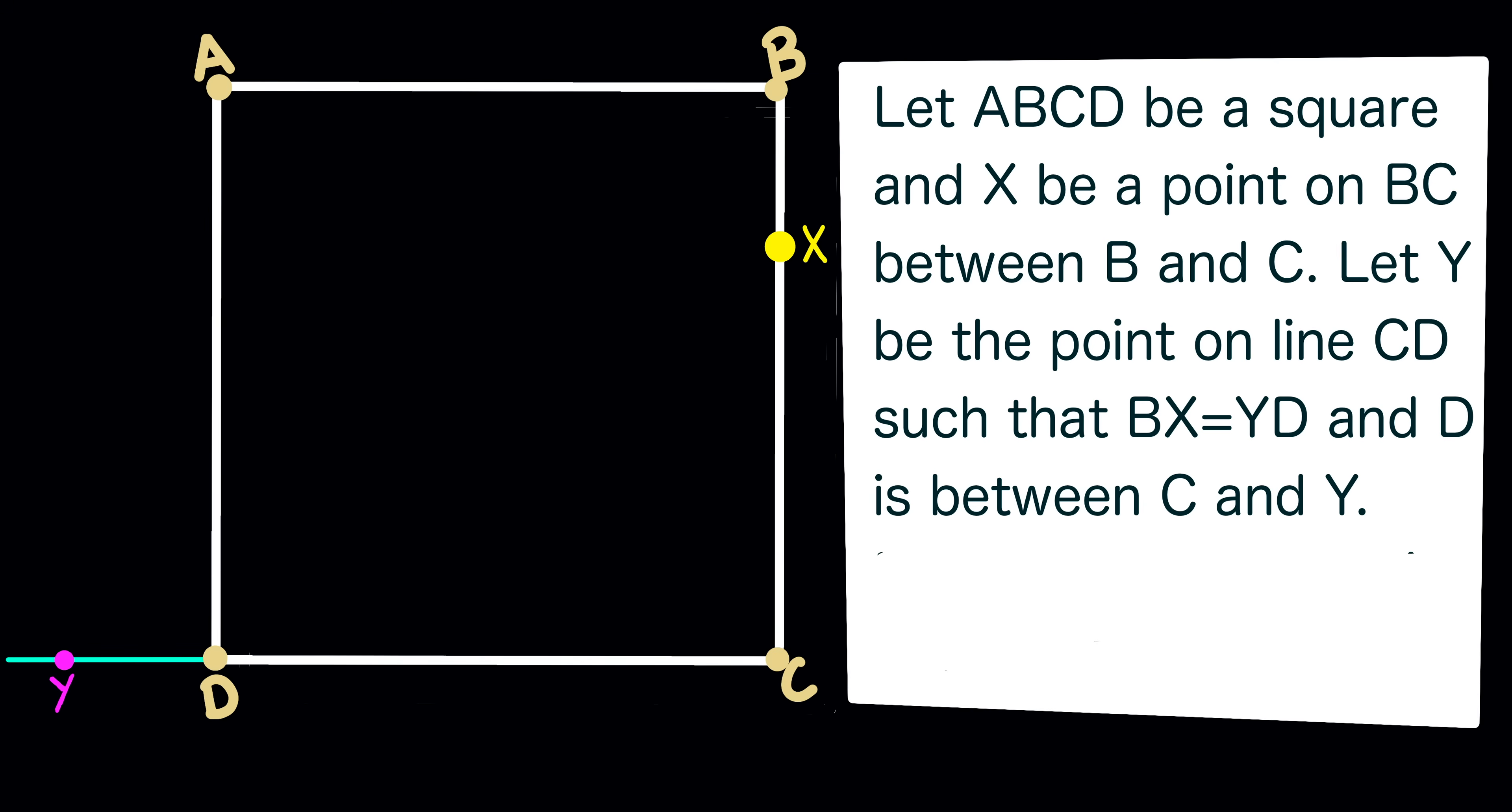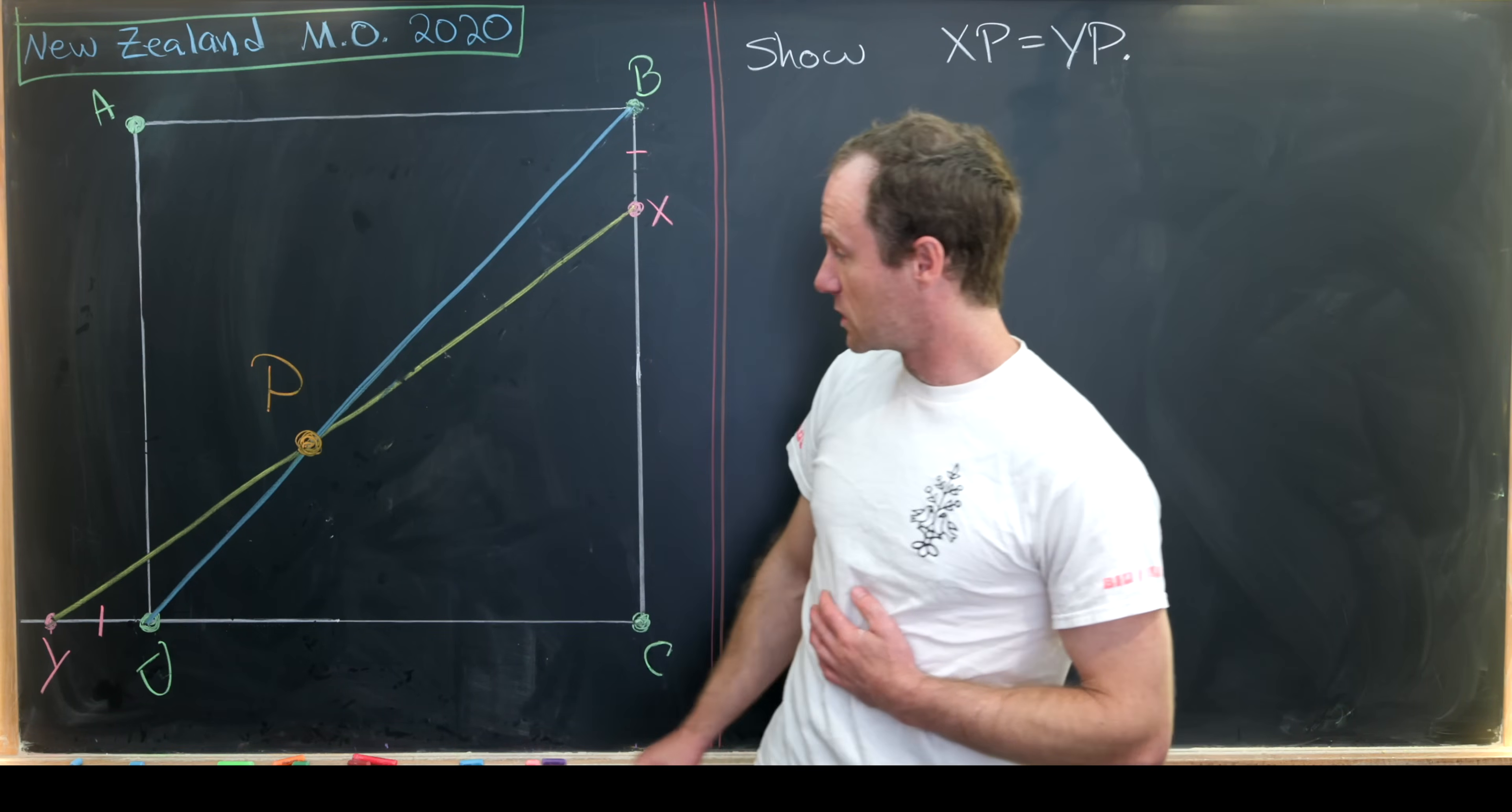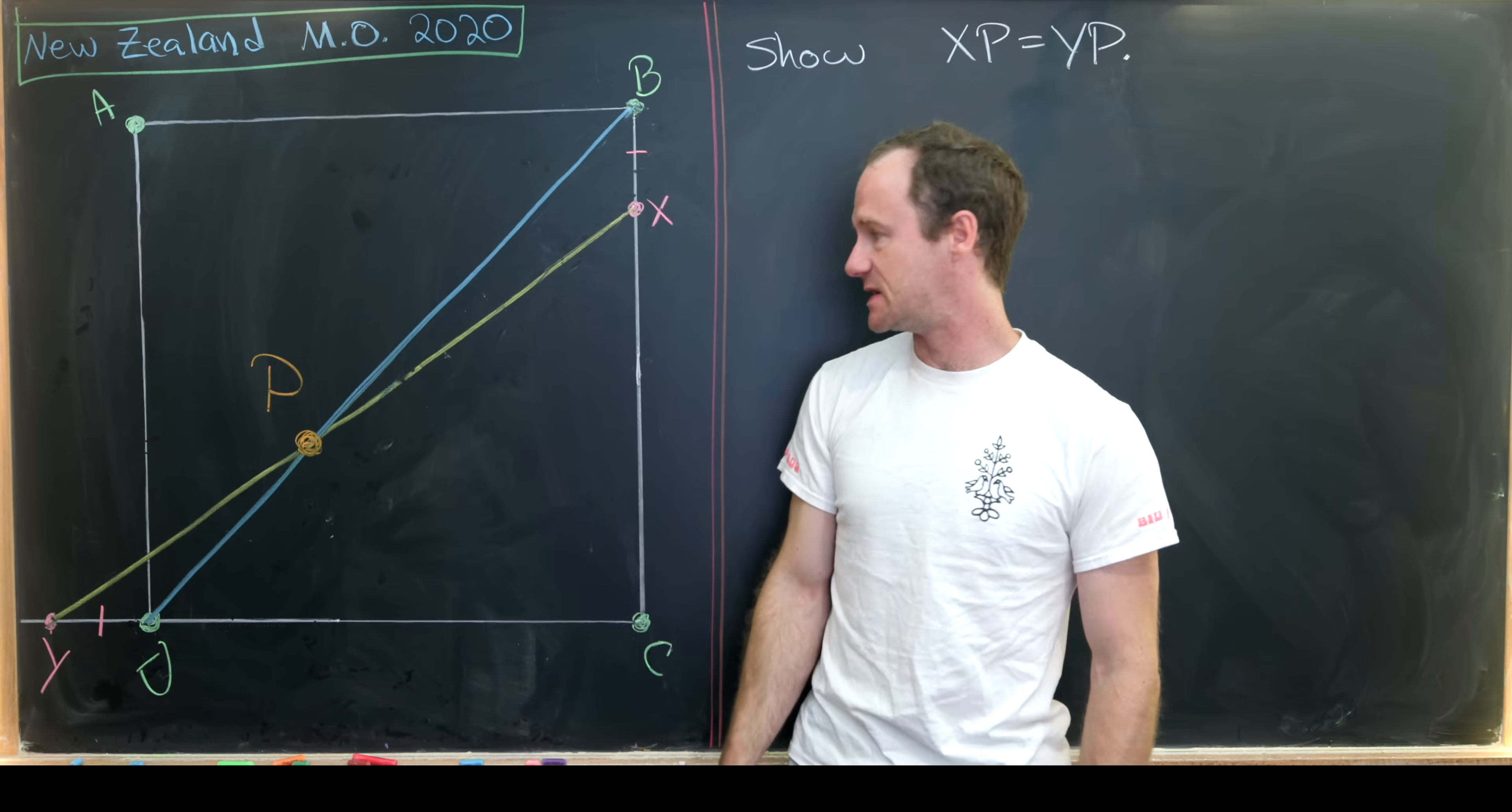And then our final goal is to prove that the midpoint of line segment XY lies on BD, where that's a diagonal of our square. So put in terms of our picture that we have on the board now, our goal is to show that P is the midpoint of line segment XY. Notice that P is the intersection of XY with the diagonal BD.